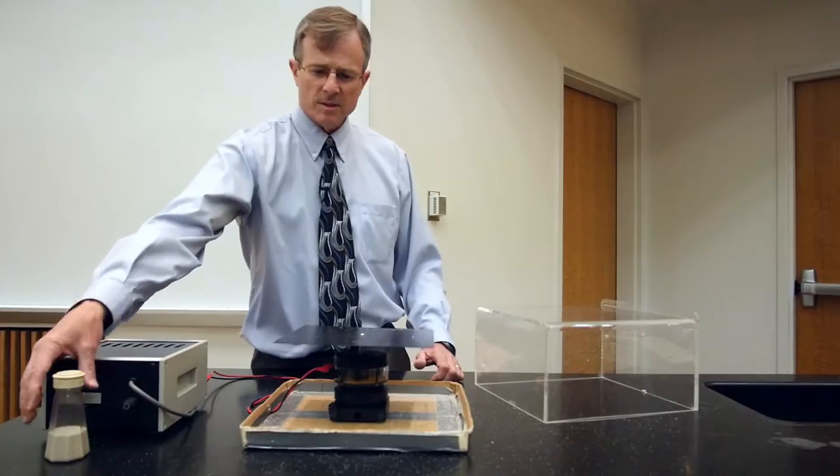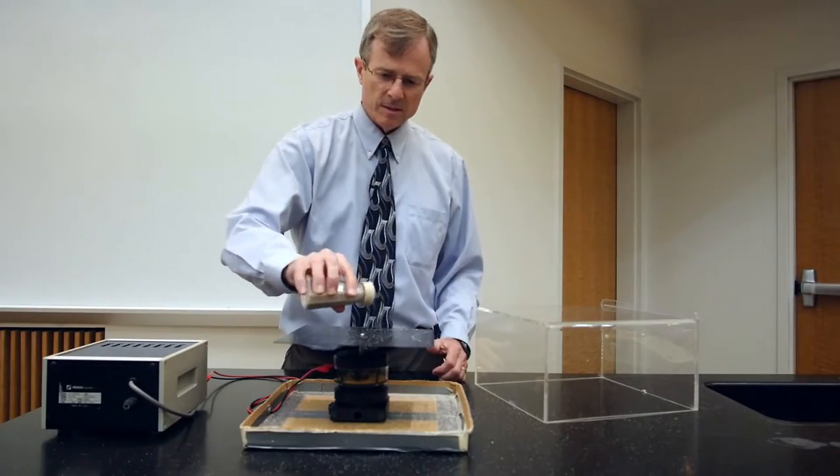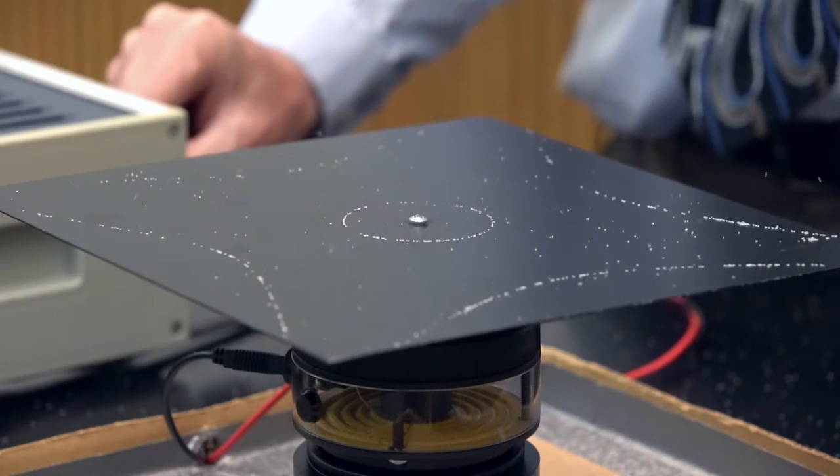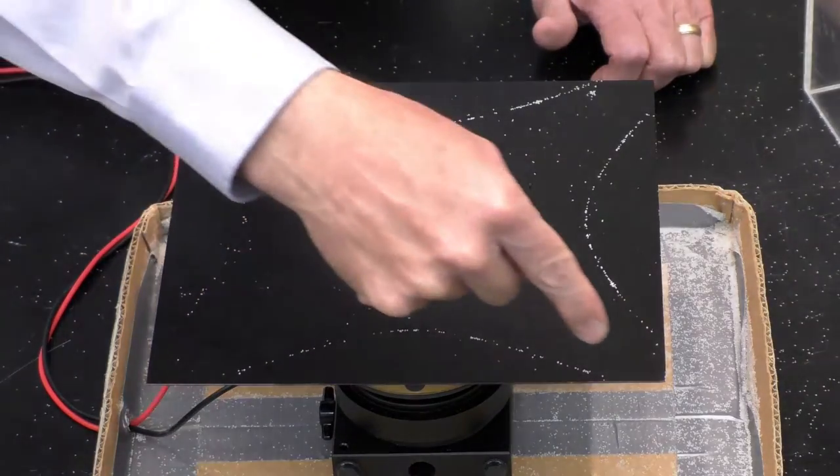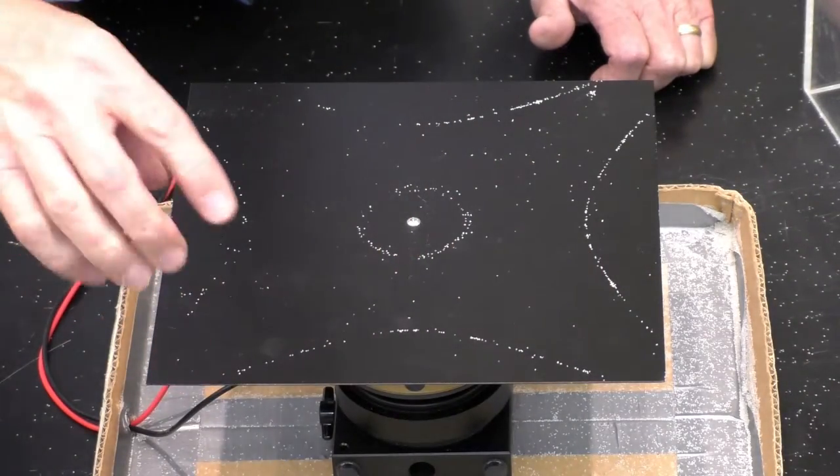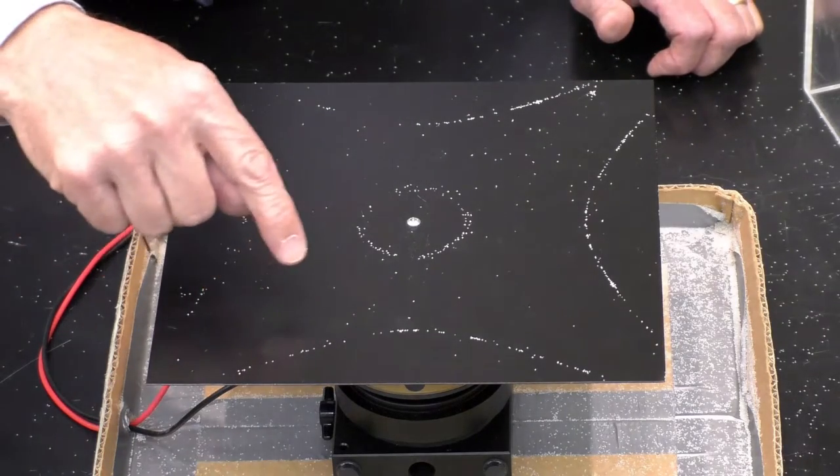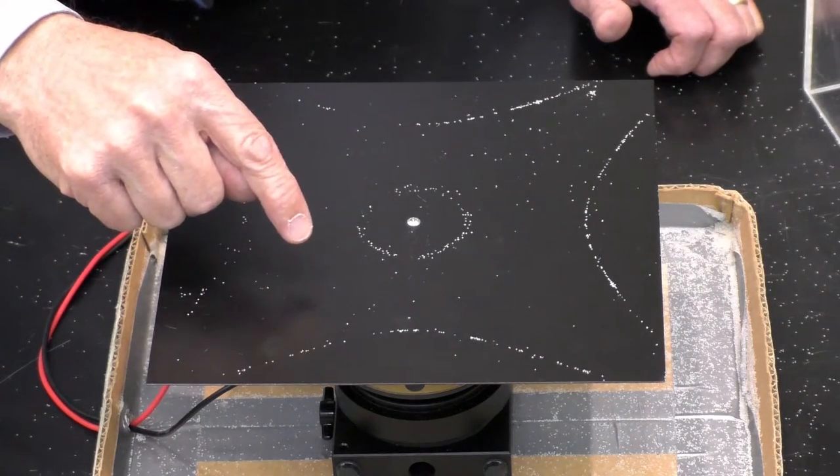Okay, so this resonance, let's see if we can get it a little bit more clearly, there we go, this line here is a nodal line, and you see other nodal lines, those are places where the sand does not bounce.